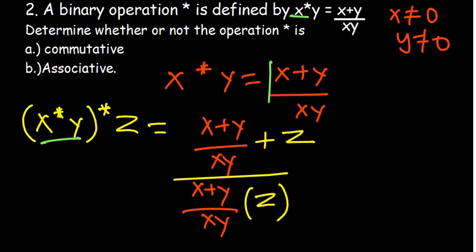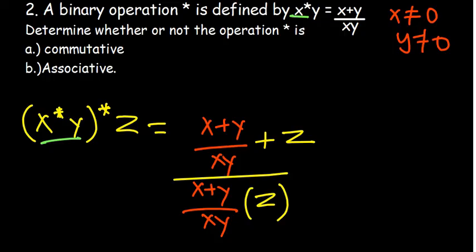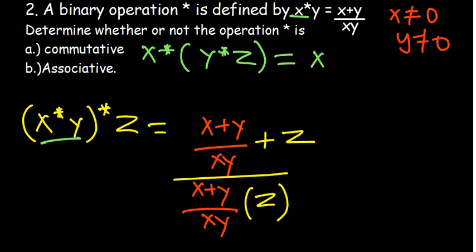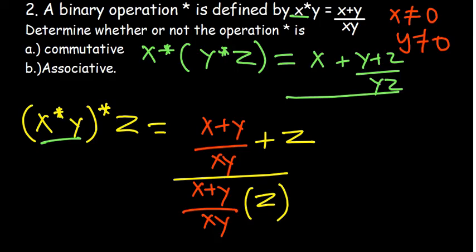Taking note of that result, we now try the other side: x★(y★z). Where x is maintained, and where y we substitute y★z, which equals (y plus z) over yz. So we get: x plus (y plus z)/yz, divided by x times (y plus z)/yz. Comparing the two sides, they are not the same — therefore this binary operation is not associative.